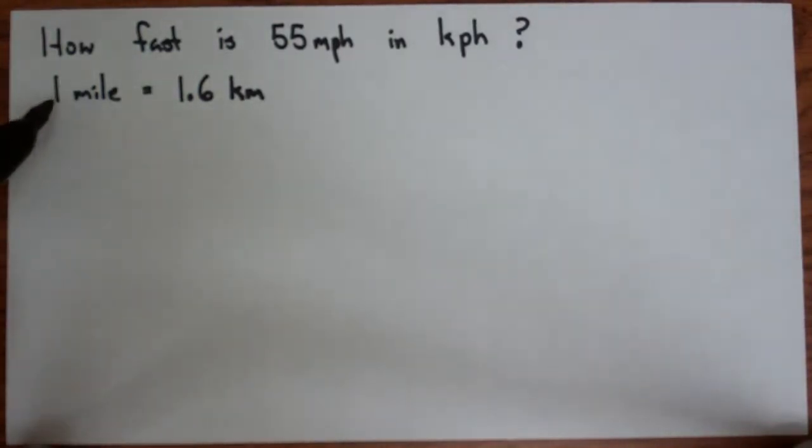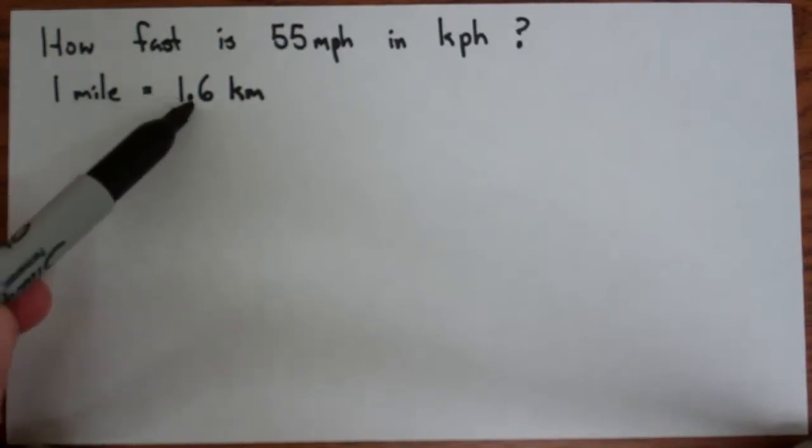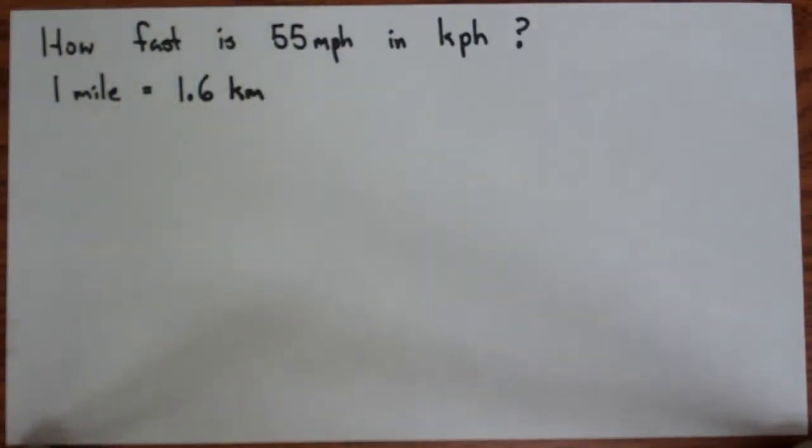Well, one mile is equivalent to 1.6 kilometers, so if you're going to go one mile in an hour, you're actually going to go 1.6 kilometers in an hour, so this is a pretty fast speed.